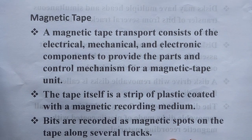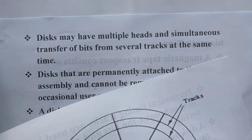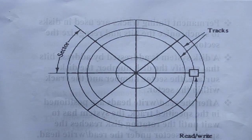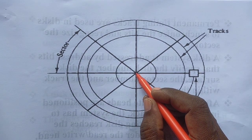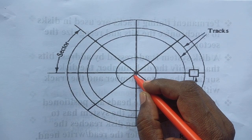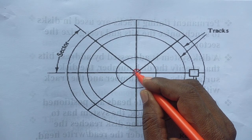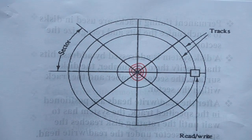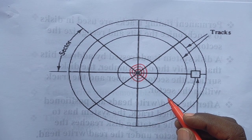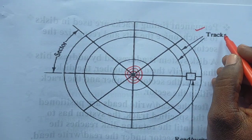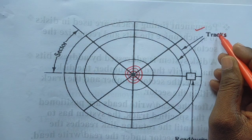Looking at the magnetic disk diagram: there is a center point, and a number of circles are defined around it, one after another. Each circle is called a track — T-R-A-C-K. The number of tracks depends on the capacity of the disk.